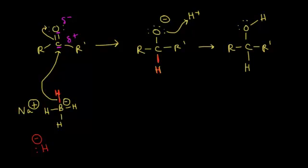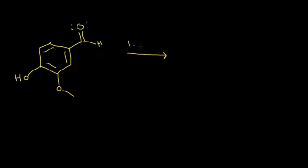Let's do an actual reaction. We'll start with vanillin, which is a very nice-smelling molecule. Looking at the structure of vanillin, there is an aldehyde functional group right there on the ring, along with some other functional groups. We're going to add sodium borohydride in the first step. Once that's reacted, we're going to add a source of protons — HCl works pretty well for this reaction.